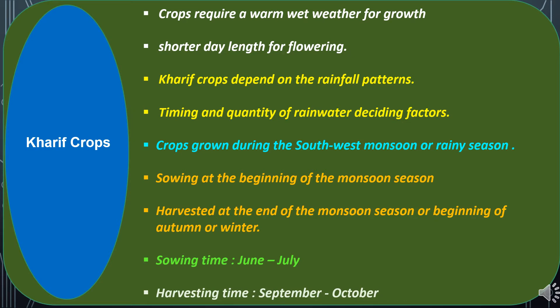First are Kharif crops, the main crops of our country, covering most of the states and most of the cropped area. Kharif crops require warm wet weather during their major period of growth and a shorter day length for the flowering period. Kharif crops depend on rainfall patterns — the timing and quantity of rainwater are the two important factors deciding their output. These crops are grown during the southwest monsoon or rainy season. Seeds are sown at the beginning of the monsoon season and harvested at its end or at the beginning of autumn or winter. Sowing time generally ranges from June to July and harvesting from September to October.